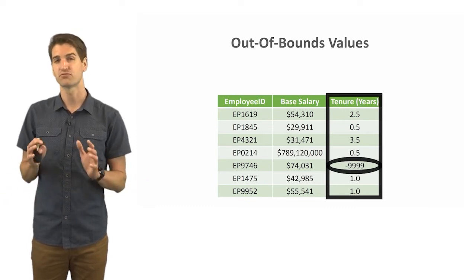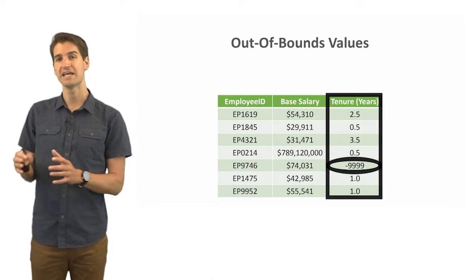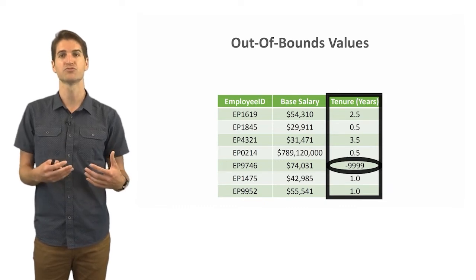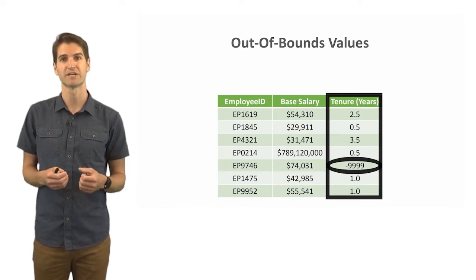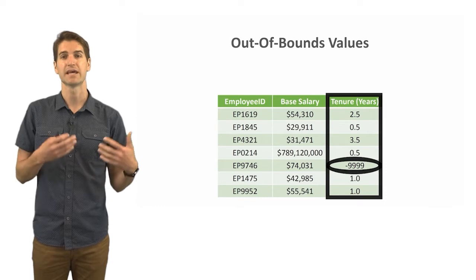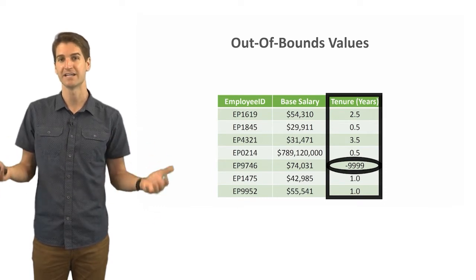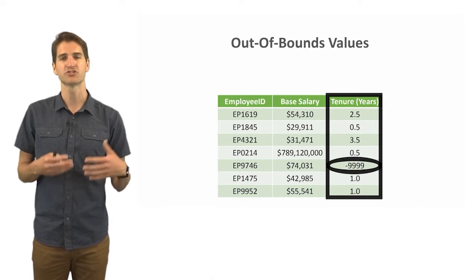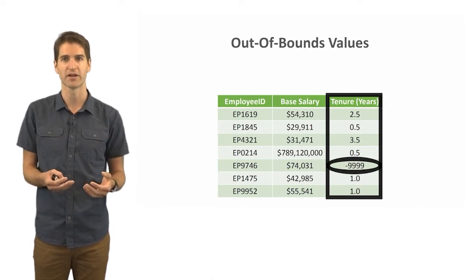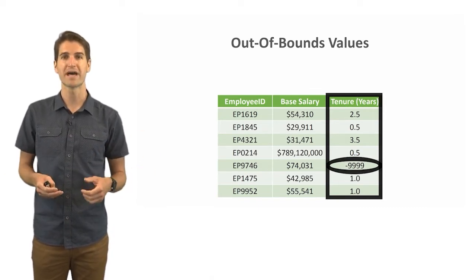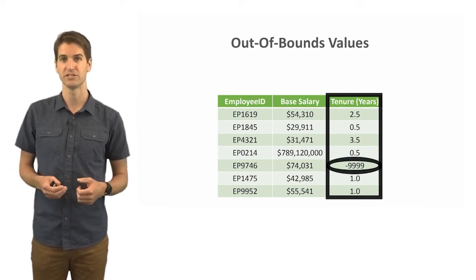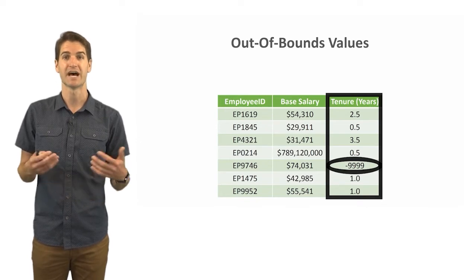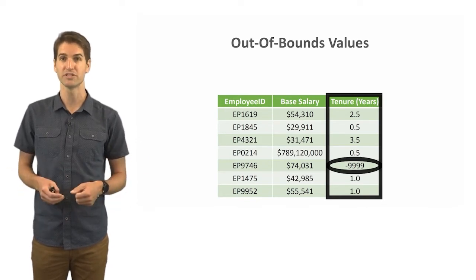It's probably unlikely that someone has negative years of tenure, so what this is perhaps is that some people choose to code missing values when someone has missing data as a negative 9999 or a negative 99 or something like that just to flag it as being very apparent. This can be very problematic because if you were going to calculate the mean number of years of tenure for this sample of people, of course this negative 9,999 would be included in that.